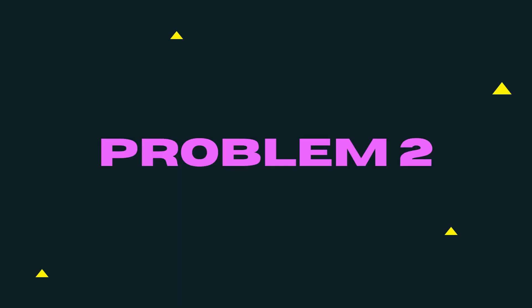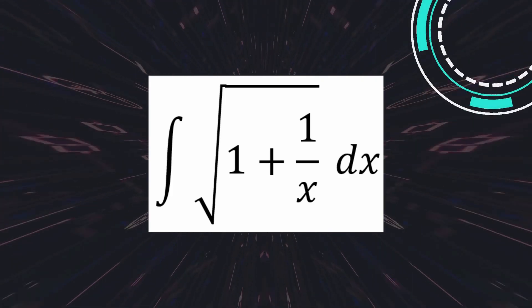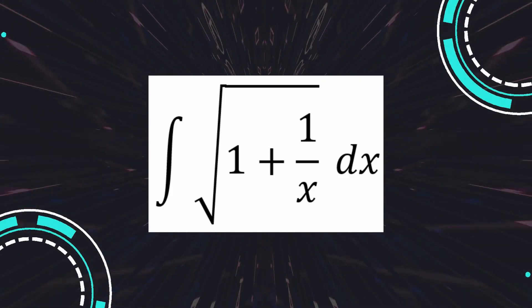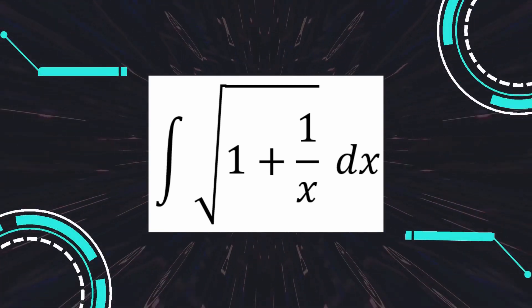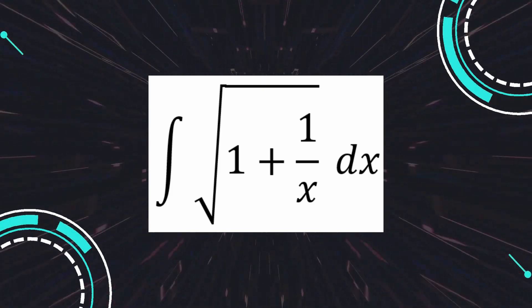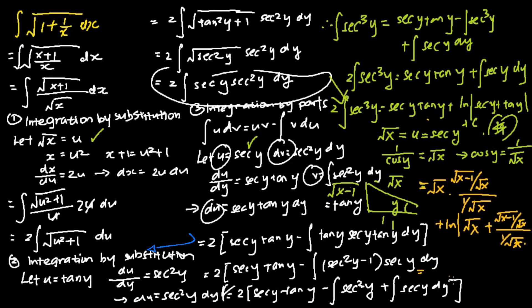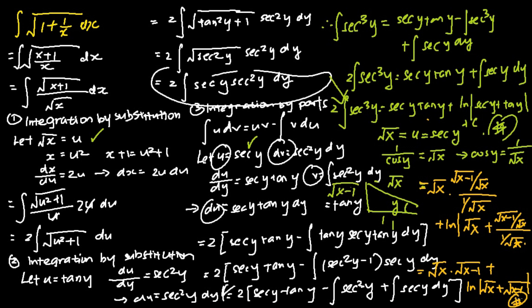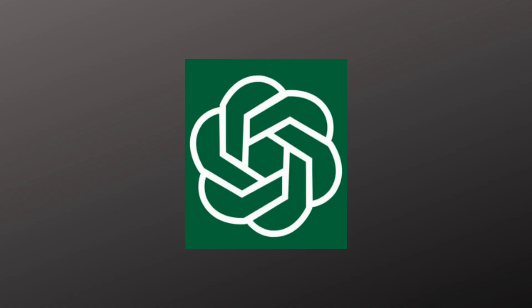The next complex integration problem we will ask ChatGPT to solve is the integration of the square root of 1 plus 1 over x dx. This seemingly easy-looking question requires you to use the integration by substitution technique twice, followed by using the integration by parts technique to get the answer. The final answer to this particular problem is the square root of x times square root of x minus 1 plus log of absolute square root of x plus square root of x minus 1.